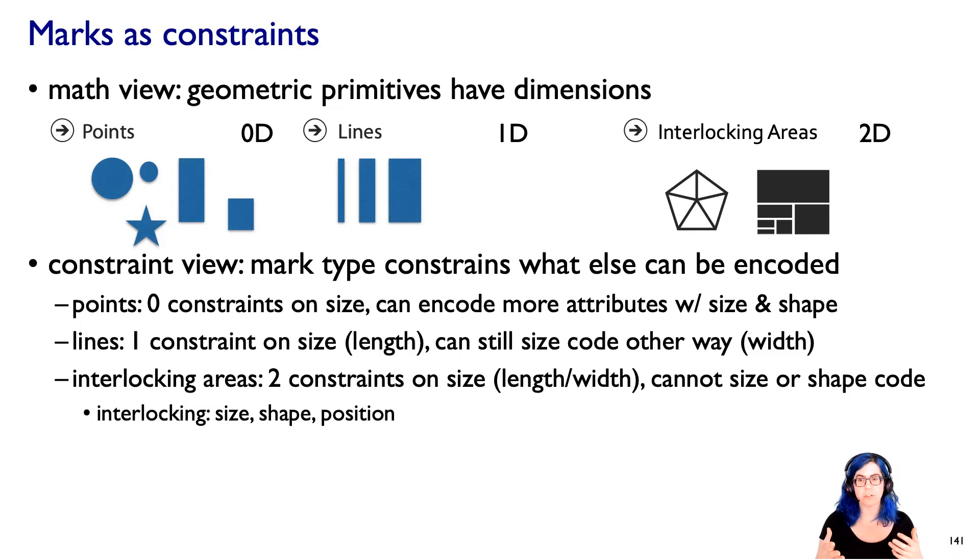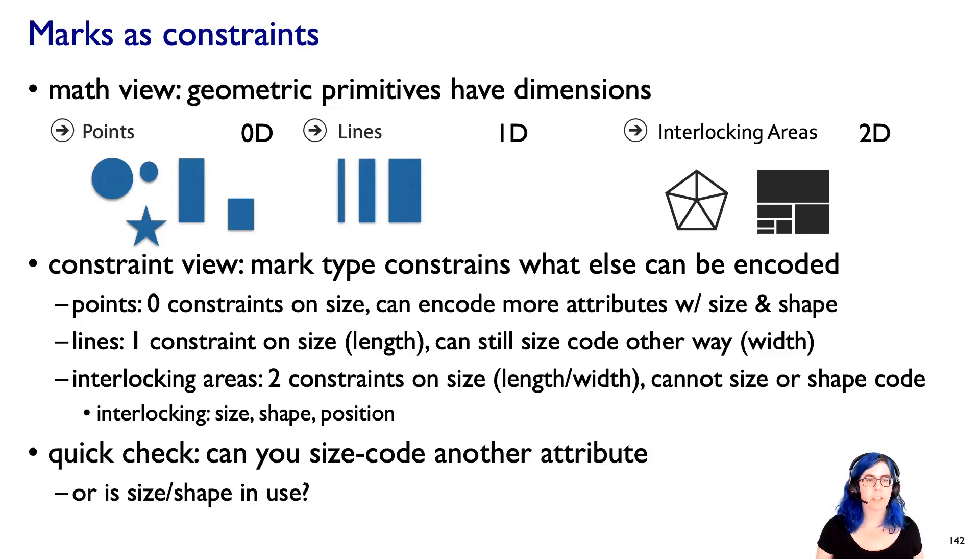In fact, you can't even position code because that is given to you with those area marks themselves. I think of them as interlocking because they are the most highly constrained. A quick check if you want to understand the mark type is, can you size code another attribute? What is locked down? Is size and shape already in use or are you able to actually size code?